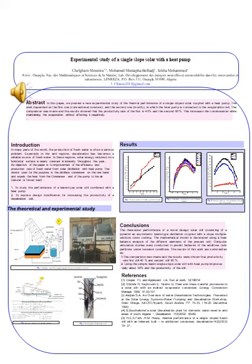Figure 5 shows the temperature distribution of different elements of the still. The maximum temperature reached is 18 degrees. Figure 6 shows the daily variation of water productivity. The productivity of the conventional solar still is 1.6 liters per square meter, and the modified still produces 2.4 liters per square meter.